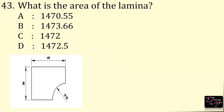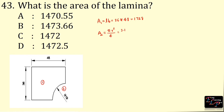What is the area of the lamina? Here we have two shapes: first is a rectangle, second is a quadrant. Area of the rectangle is length × breadth = 36 × 48 = 1,728. Area of the quadrant is πr² ÷ 4 = 3.14 × 18² ÷ 4 = 254.34.